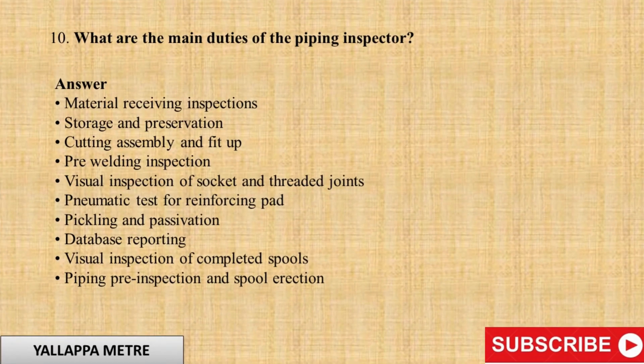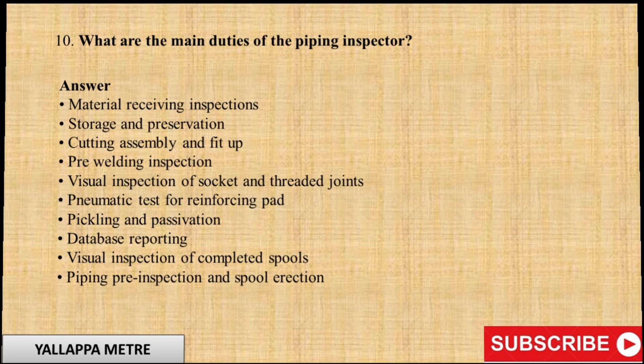Question 10: What are the main duties of the piping inspector? Answer: Material receiving inspections, storage and preservation, cutting assembly and fit-up, pre-welding inspection, visual inspection of socket and threaded joints, pneumatic test for reinforcing pad, pickling and passivation, database reporting, visual inspection of completed spools, piping pre-inspection and spool erection.